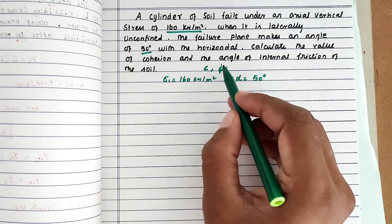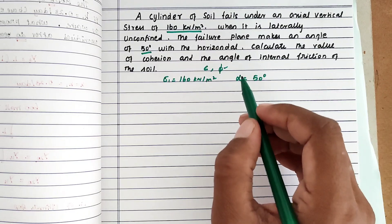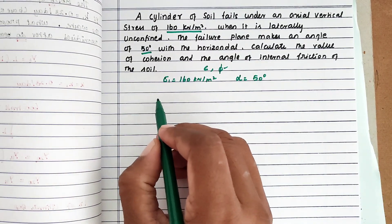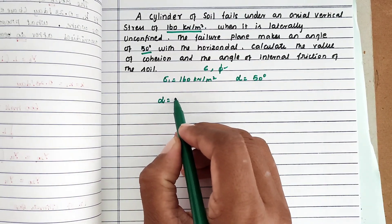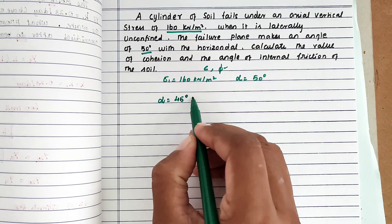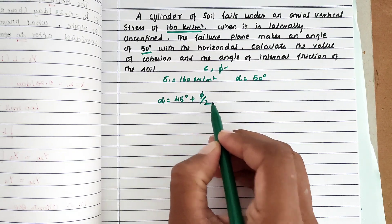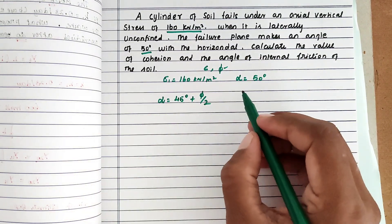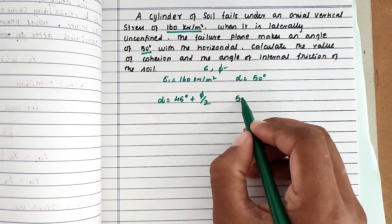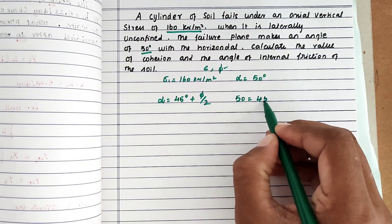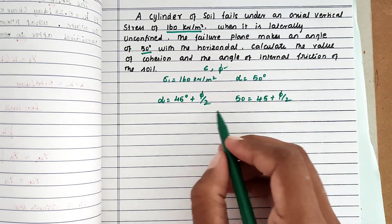From that we can find c as well as phi. Now for the solution, first we use the formula: alpha equals 45 degrees plus phi by 2. We can directly substitute: 50 equals 45 plus phi by 2.